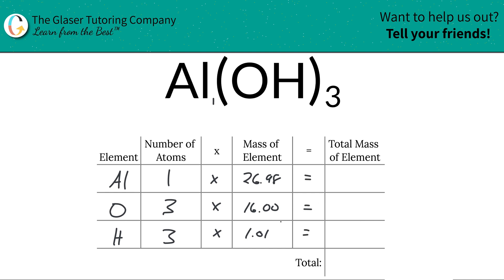So then to find the total mass now of the element in the compound, we're just going to simply multiply this row together. So for aluminum, it's just simply 26.98. For oxygen, it's going to be 48. And then hydrogen, it's about 3.03.